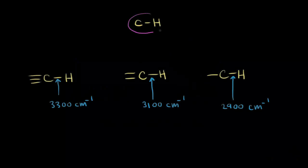We've already looked at a carbon-hydrogen bond, and in the last video we actually calculated an approximate wave number for where we would expect the signal for a carbon-hydrogen bond stretch to appear on our IR spectrum. We got a value of a little bit over 3,000 wave numbers.